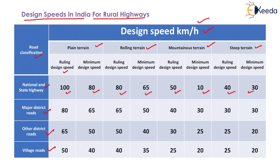Normally, rolling design speed should be the guiding criteria for correlating the various geometric design features. Minimum design speed may however be adopted in sections where site conditions including cost do not permit a design based on the rolling design speed.